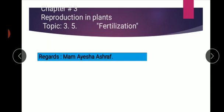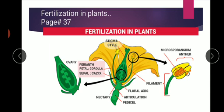So today we are going to study chapter number 3, topic number 3.5: Fertilization. Your previous topic was about sexual reproduction. Now we are going to study about fertilization in plants.